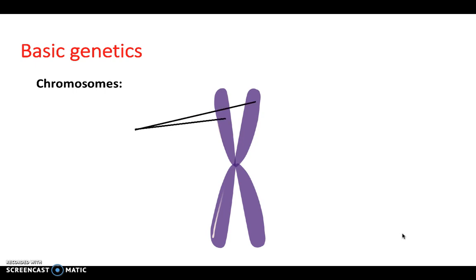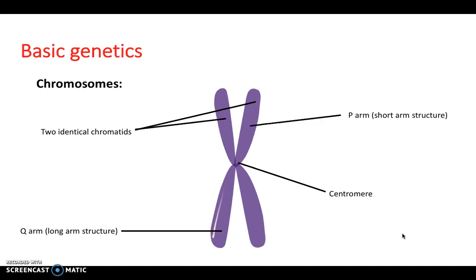So this here is a chromosome. And to label it, these are two identical chromatids. In the middle, we have the centromere. And this is the part keeping the chromosome together. Then we have a Q arm, which is the long arm structure, and a P arm, which is the short arm structure.